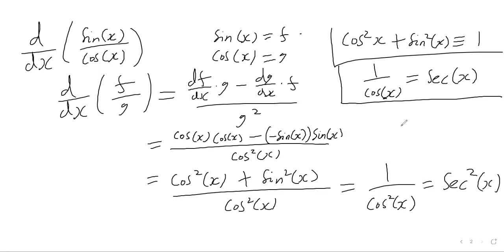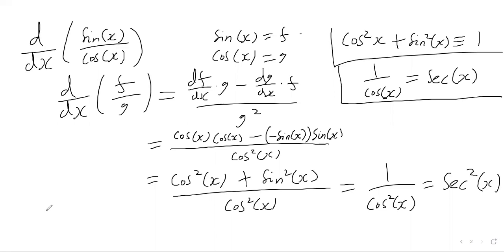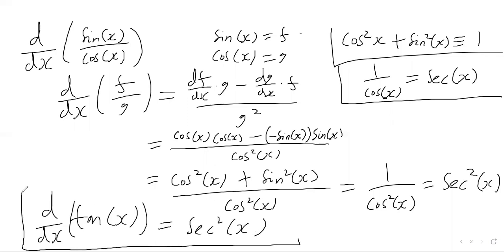So what we've concluded is that when we differentiate tan of x we get sec squared of x. The derivative of tan is one over cos squared, which is the same as sec squared of x — and that is the result we wanted.